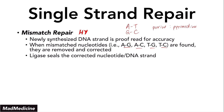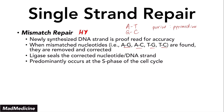Mismatch repair mainly happens in the S phase of the cell cycle — it's not happening at all times. This is very important because there is a syndrome associated with errors in mismatch repair that is very high yield and that you will be tested on — dealing with errors specifically in mismatch repair.